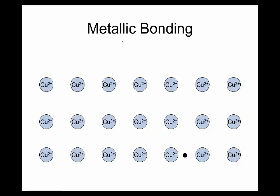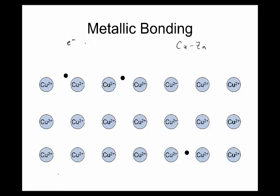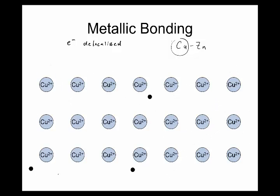We also have metallic bonding, which is like an alloy. If you play a musical instrument, most of them are made out of brass — mainly copper melted together with zinc. In an alloy, the metals lose their electrons and share all those electrons, creating a sea of electrons. We say the electrons are delocalized — they don't have a home atom; they just whizz through the material. This is why metals like copper are used for conduction.